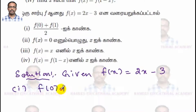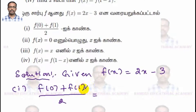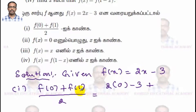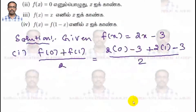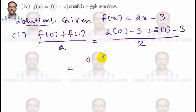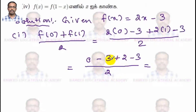Sub-question number one: we are going to find f(0) + f(1) divided by 2. For f(0), we apply x = 0: f(0) = 2 × 0 − 3 = −3. For f(1), we apply x = 1: f(1) = 2 × 1 − 3 = −1. So [f(0) + f(1)] / 2 = (−3 + (−1)) / 2 = −4 / 2.